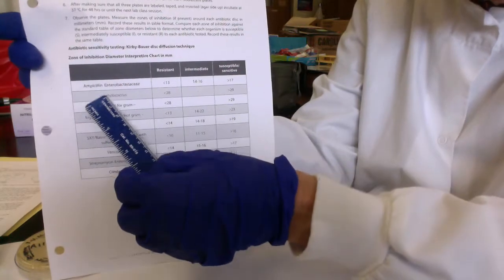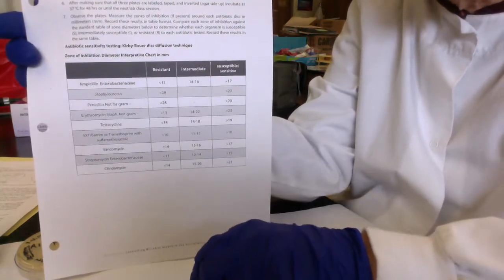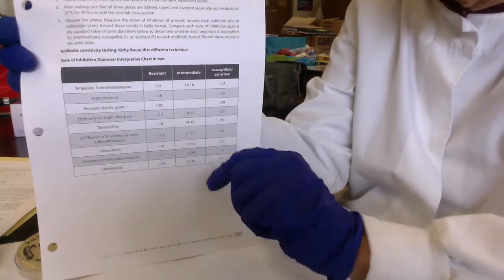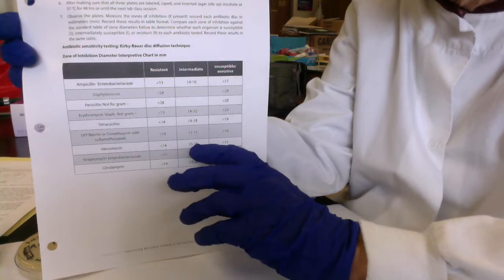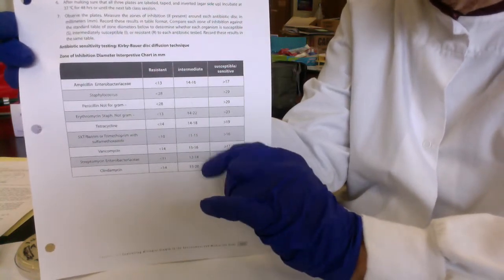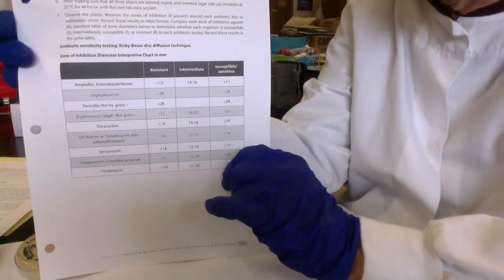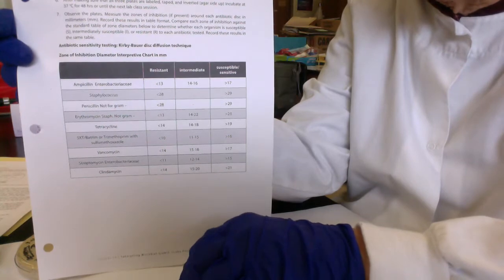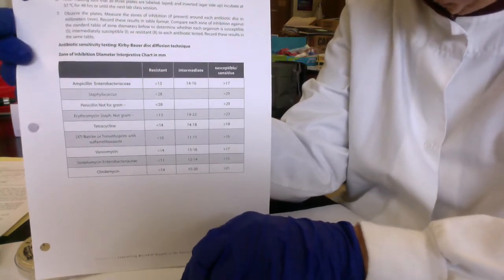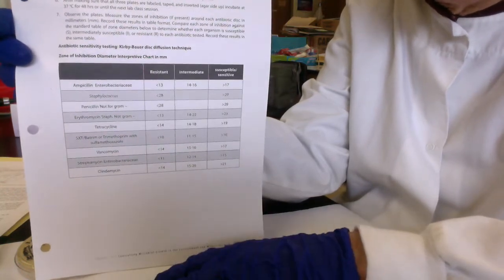We'll do another video giving zones of inhibition with different antibiotics so we can practice using this table, since it's important to know for the lab exam. For unknowns, if we have to do them online, we might develop them into actual clinical cases and try to get you to determine which antibiotics the bacteria would be sensitive or resistant to, but that's going to come a lot later.